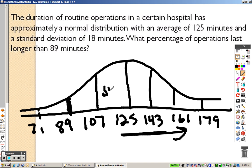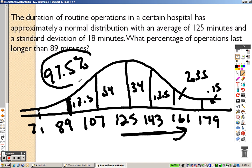Well, remember, this is 34, this is 34, this is 13.5, this is 13.5, that's 2.35, right? That's 0.15 right in there, so I just add them up, 13.5 plus 34, plus 34, plus 13.5, plus 2.35, plus 0.15. And, we end up getting 97.5% as our answer.